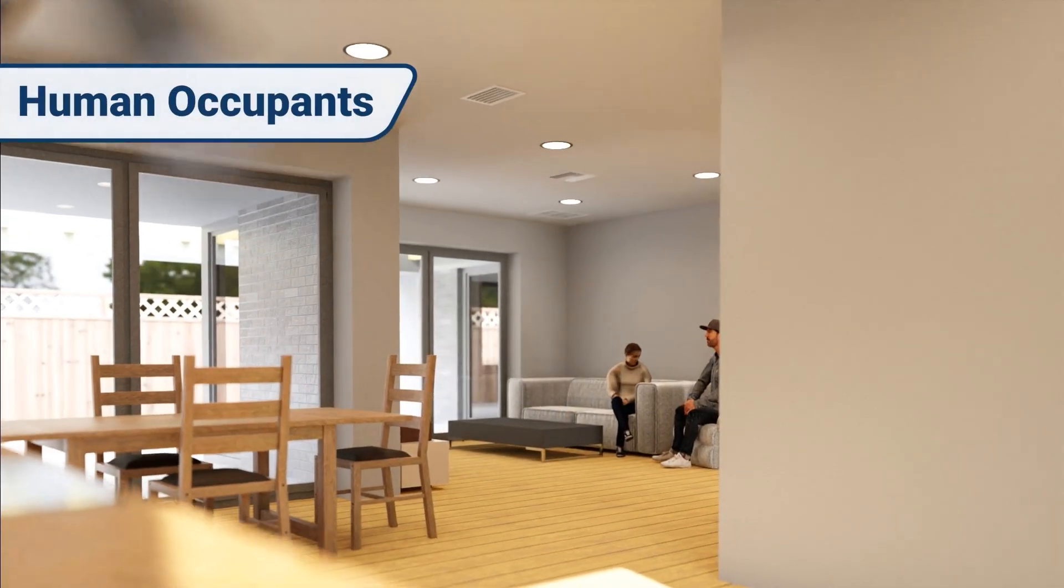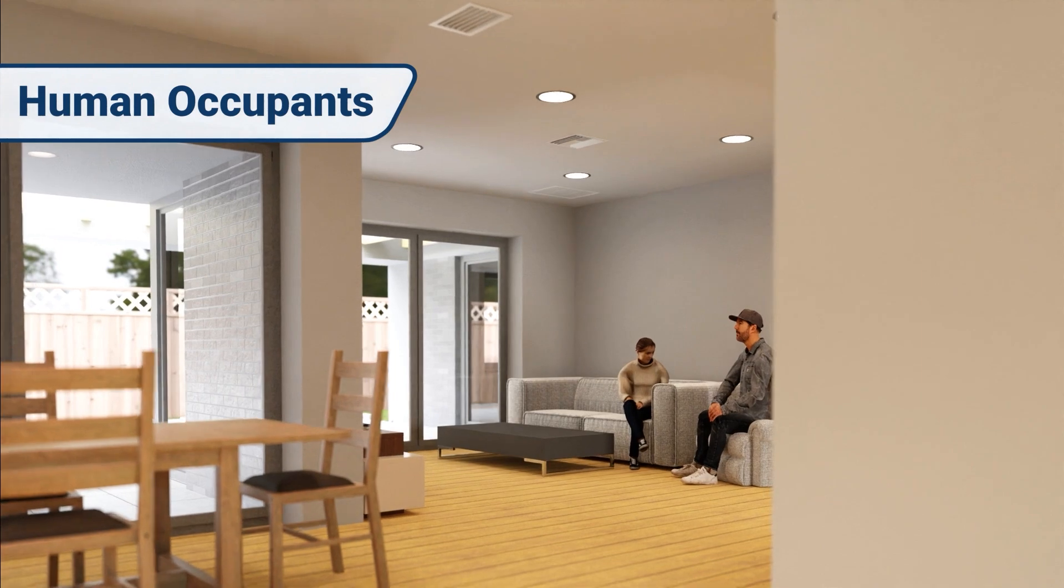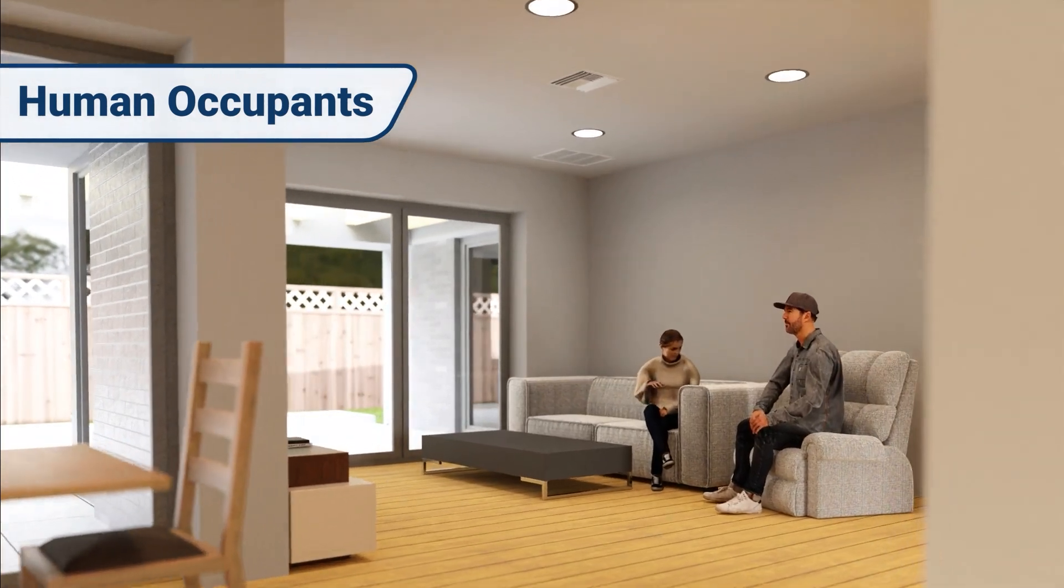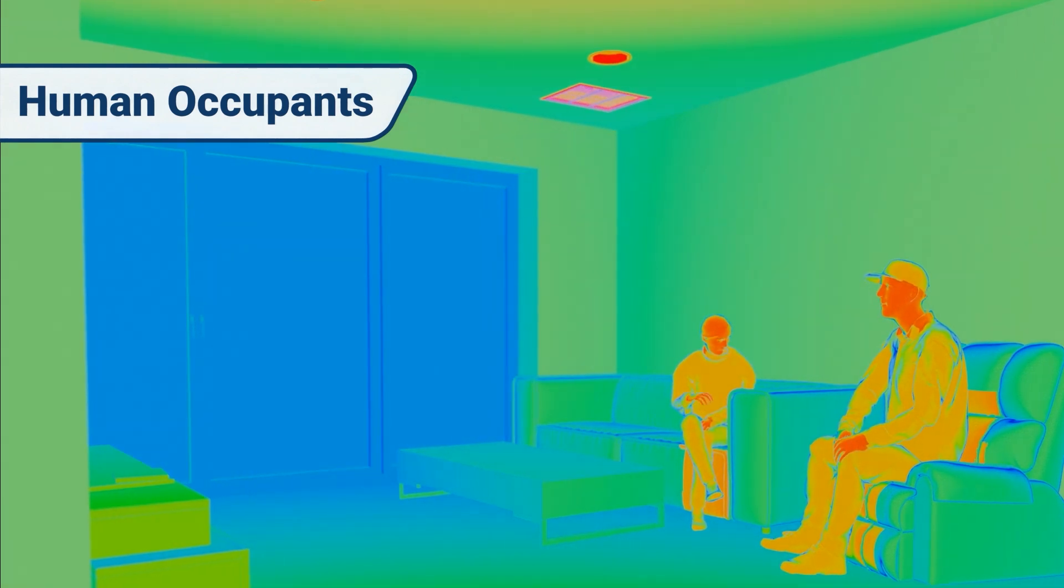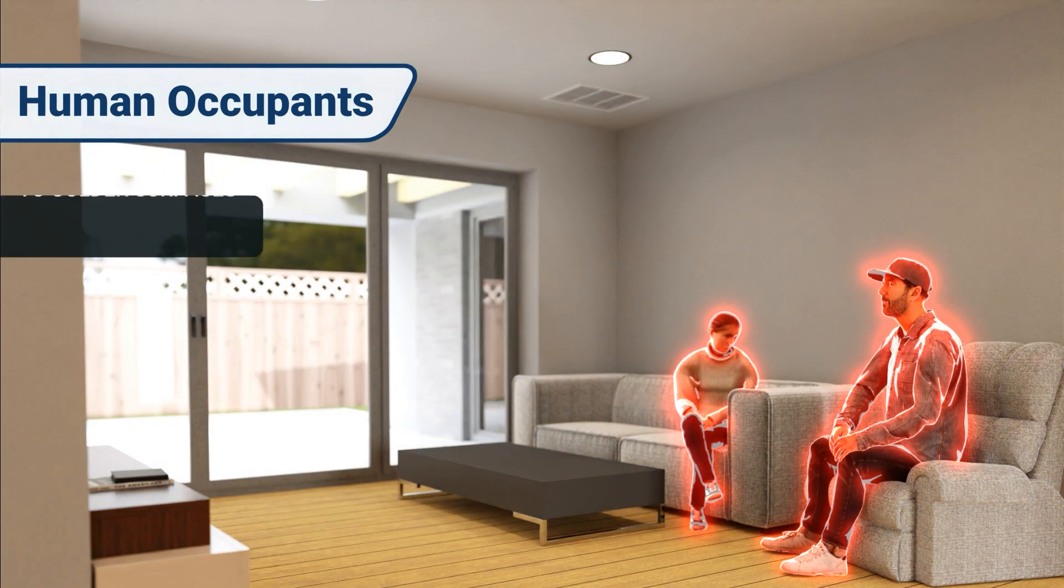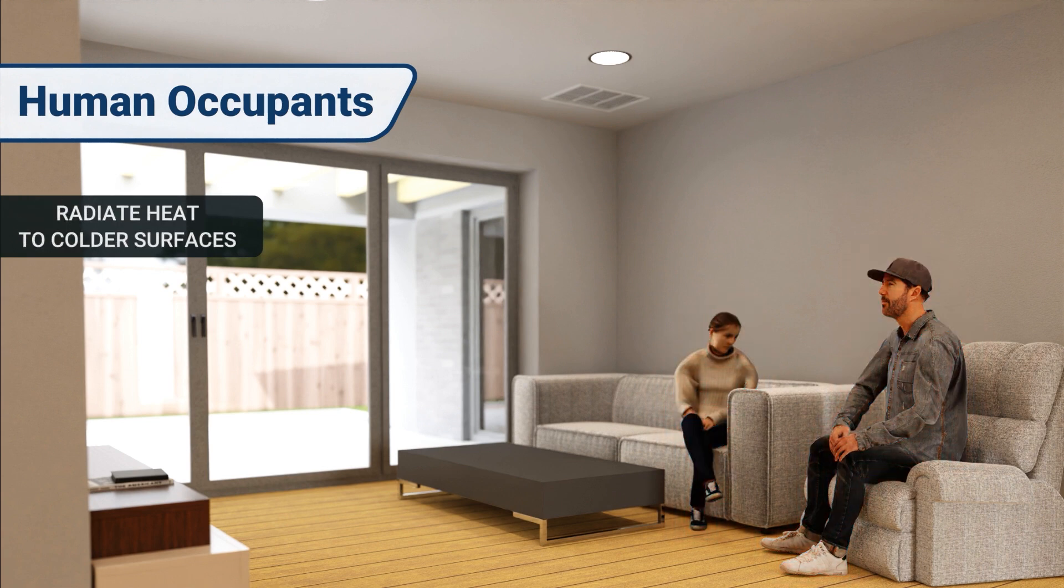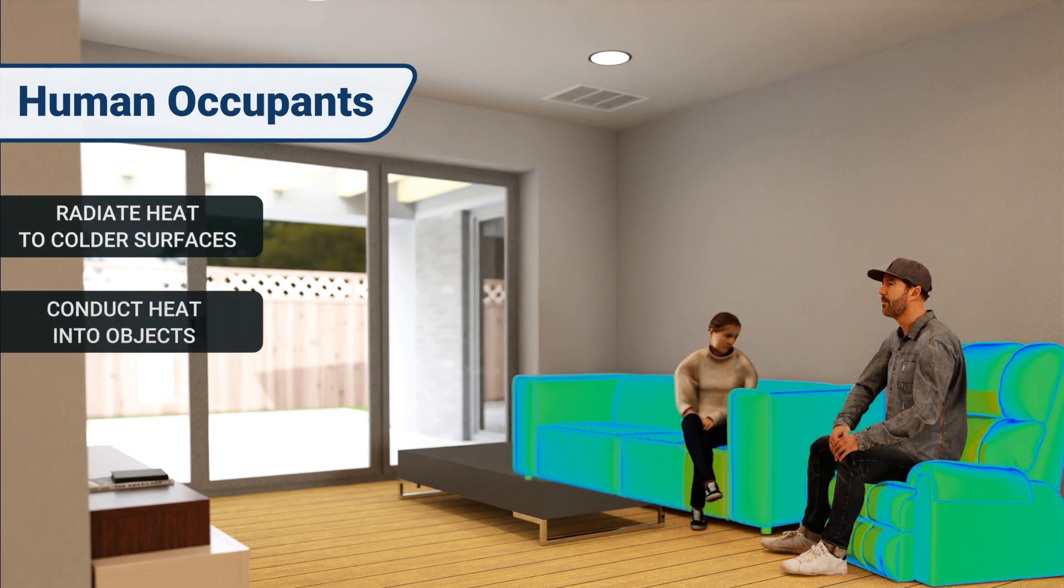Just as BTUs can enter and leave the home via conduction, convection, and radiation between indoors and outdoors, human occupants also add heat to the structure. Human occupants radiate heat to colder surfaces, conduct heat into objects and air molecules they touch, and generate convection when they move around.